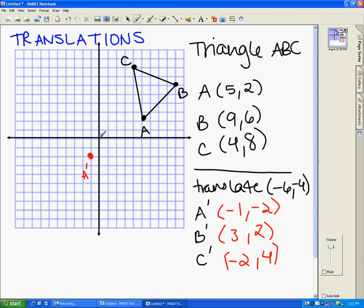b prime is at 3, 2. So I'm going to go to the right 3 because it's positive 3. And then I'm going to go up 2 because it's positive 2. So that's b prime. And then c prime is at negative 2, 4. So I'm going to go to the left 2. And then I'm going to go up 1, 2, 3, 4. And so this is c prime.